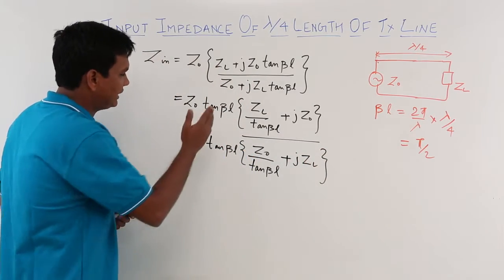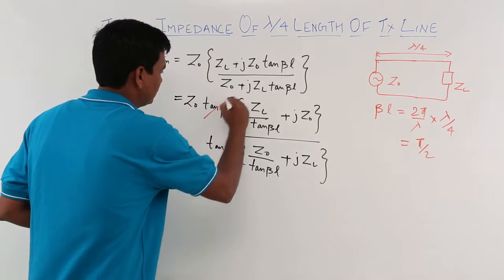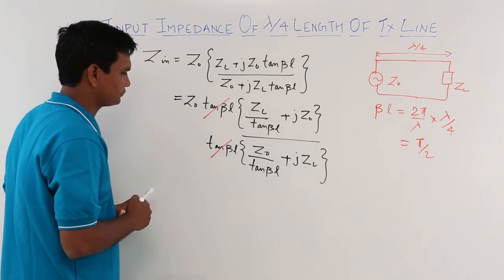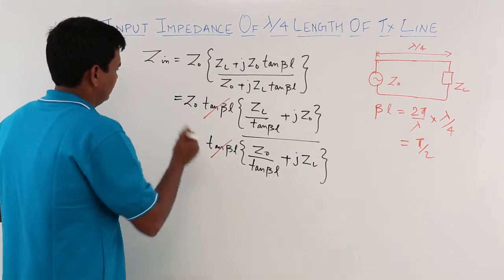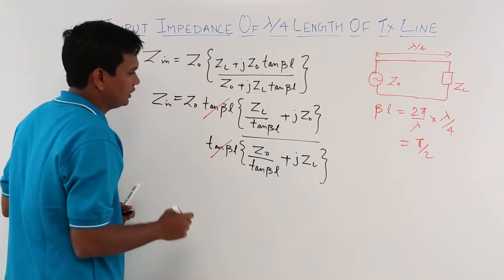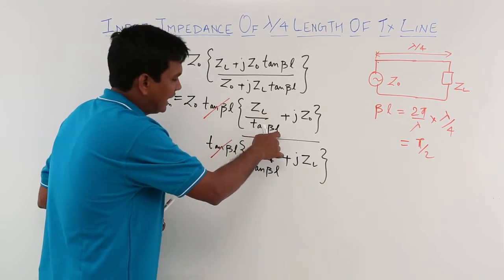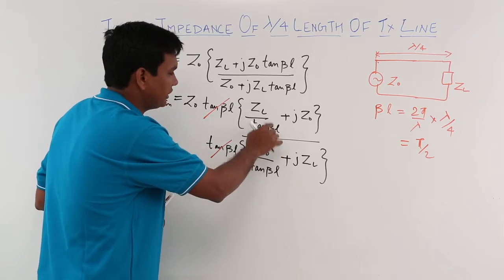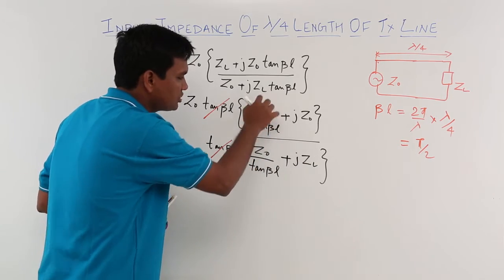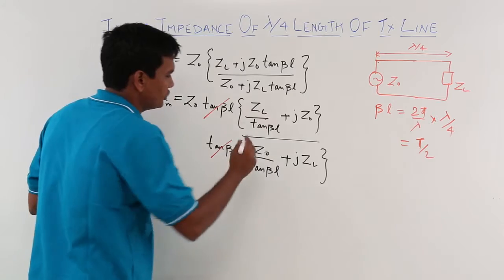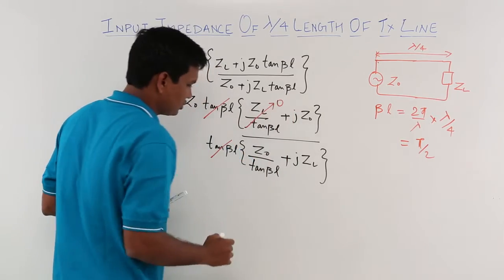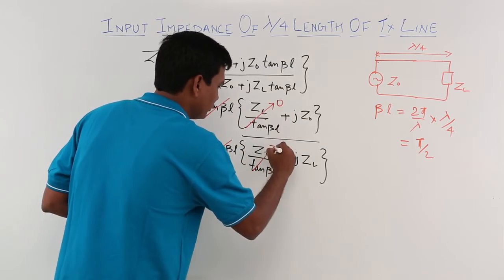The tan beta l terms get cancelled. This is my zin. Now, tan beta l will become tan pi by 2, which is infinity. zl by infinity goes to 0, this quantity will go to 0, and this quantity will again go to 0.